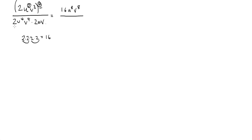On the bottom we have the product rule. 2 times 2 is 4. u to the fourth times u — remember there's an understood exponent of 1 if it's not written — 4 plus 1 is 5, so u to the fifth. And v to the fourth times v to the first is v to the fifth.